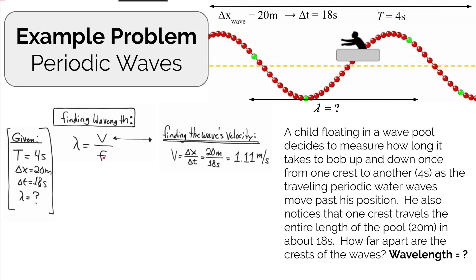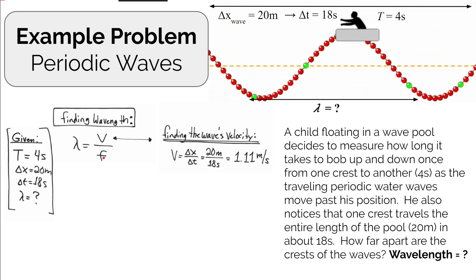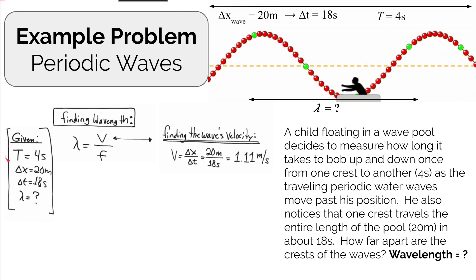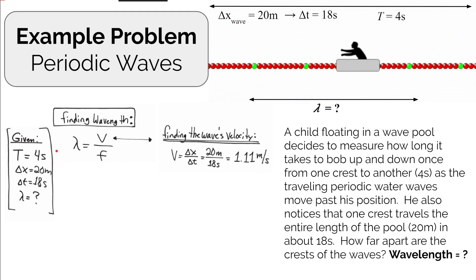What about frequency? We're not given frequency, but we do know the period. It takes about four seconds for one complete cycle to happen. How is frequency related to period?